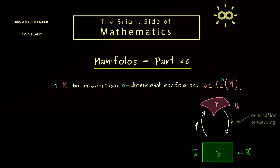We also know that such a volume form has a local representation with respect to this chart. Namely, by going through all points p in the chart, we find a component function for omega, usually denoted by omega with indices. In this case we have the indices 1, 2, and so on until we reach n, together with the standard 1-forms in the wedge product — so we have dx_p1 wedge dx_p2 and so on.